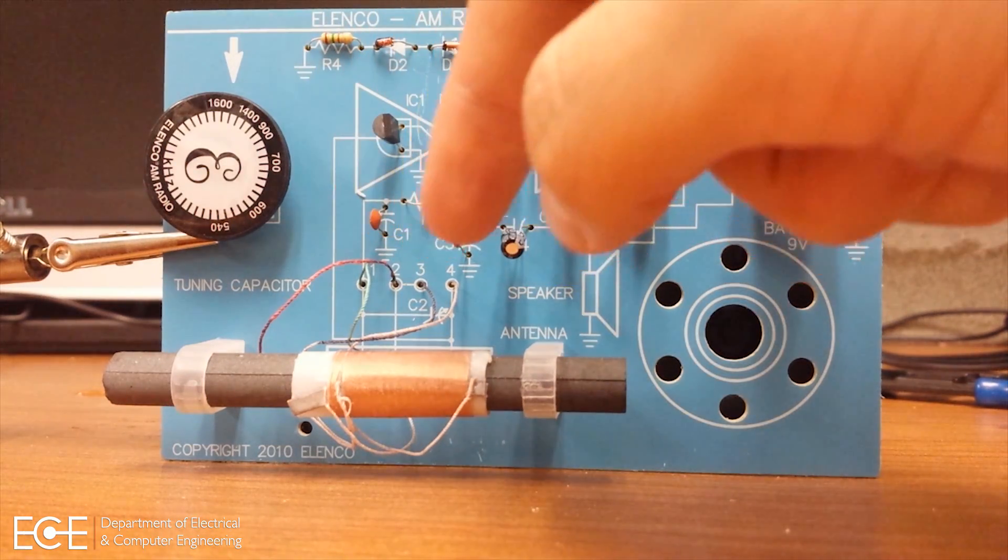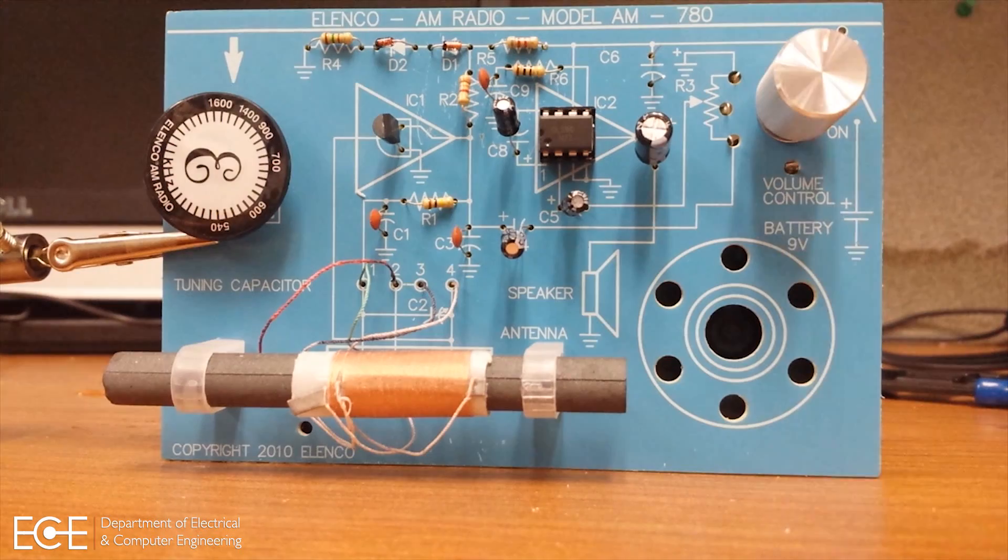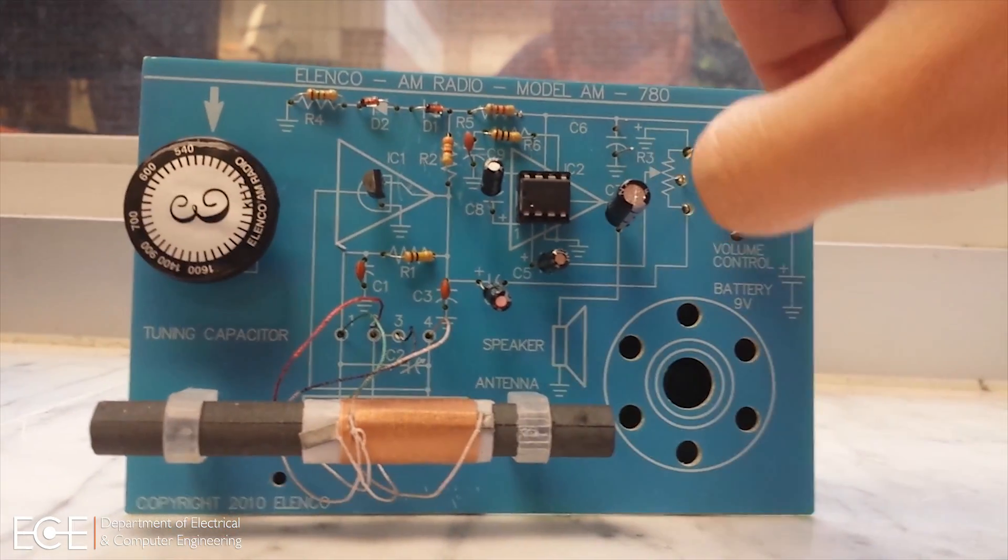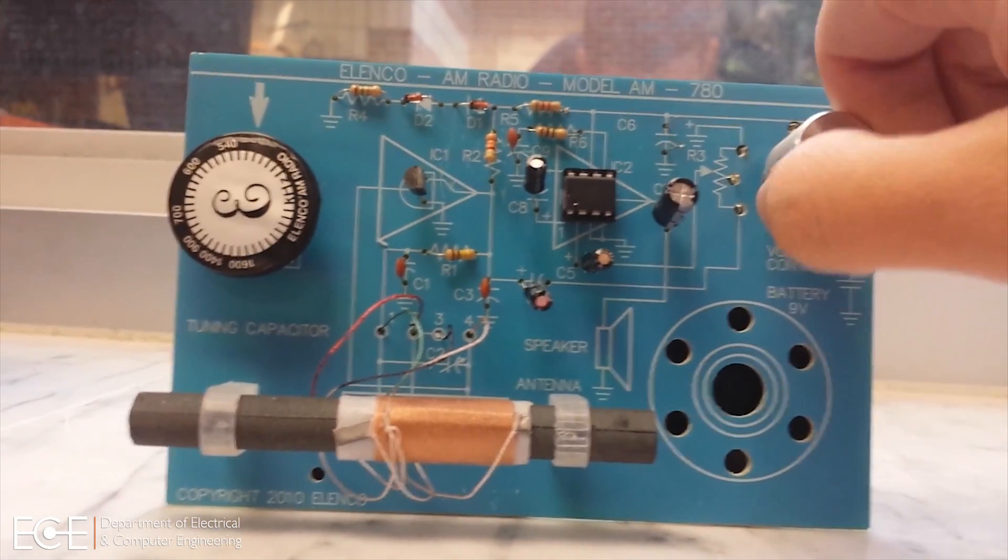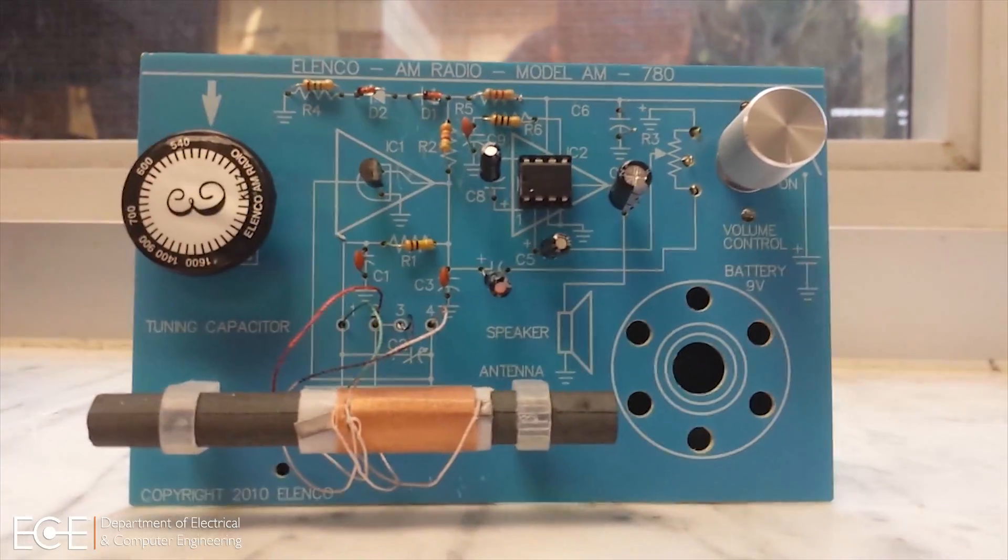Once you've placed the wires through the holes, you can solder them to the board. Once all of the components have been soldered to the board, including the wires from the ferrite rod antenna, please insert your 9-volt battery and try to turn on.